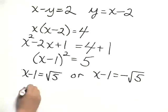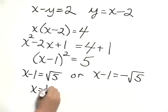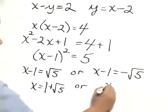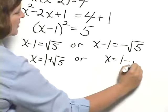And adding 1 to both sides gives me x equals 1 plus the square root of 5, or x equals 1 minus the square root of 5.